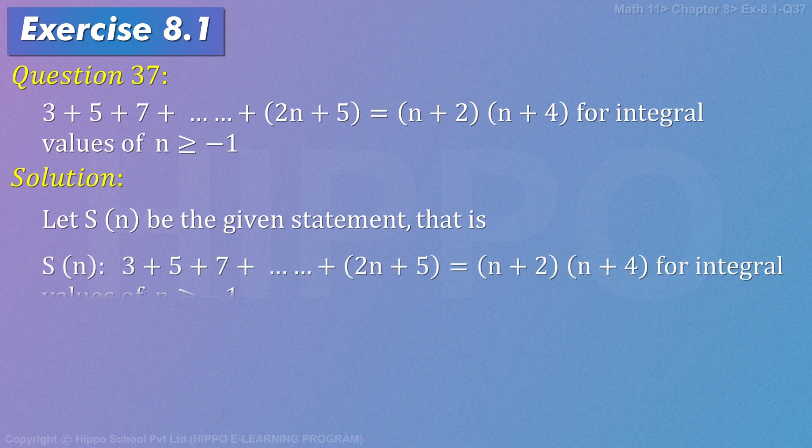S of n such that 3 plus 5 plus 7 plus so on plus 2n plus 5 equals to n plus 2 times n plus 4 for integral values of n greater than equal to minus 1. Condition 1 is when we keep n minus 1.